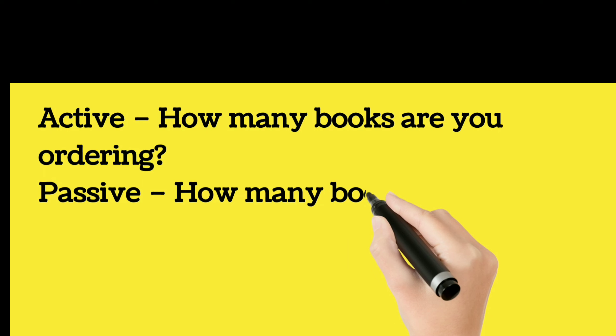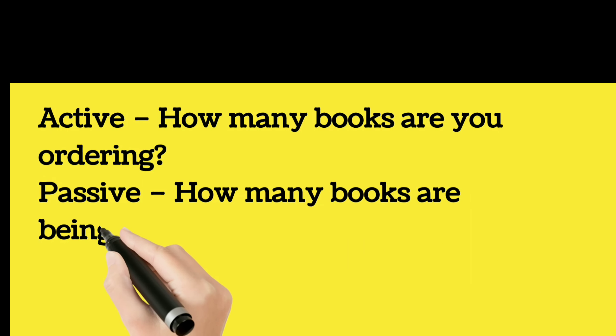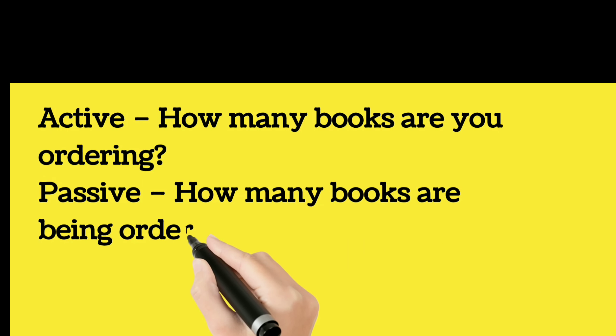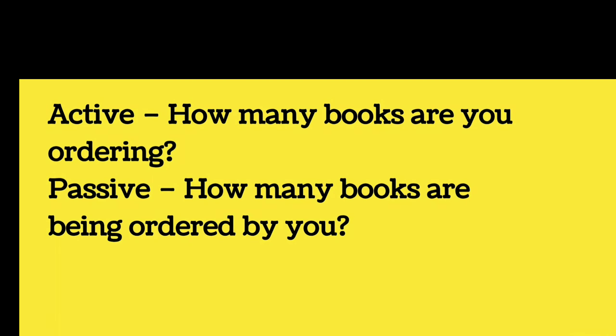Active: how many books are you ordering? Passive: how many books are being ordered by you?